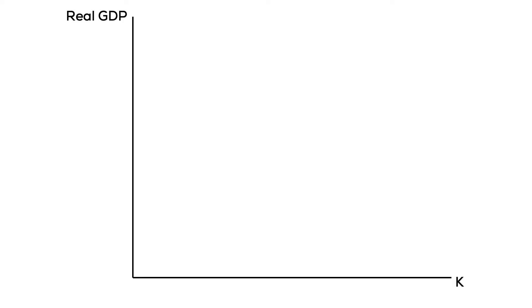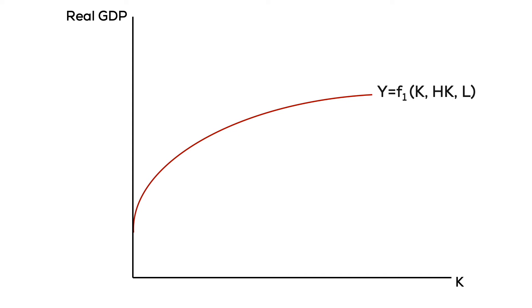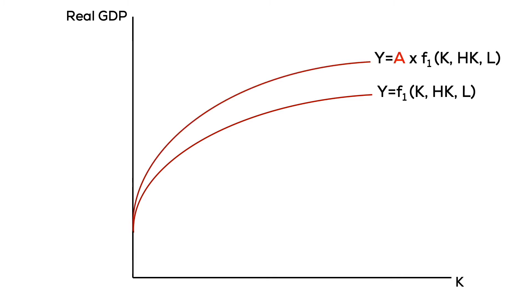We can use the production function to graph what we mean by this. With capital on the x-axis and real output on the y-axis, Solow Model 1 had a production function that increased at a decreasing rate. Once we implement technological improvements through A, it pushes our entire production function upwards — production increases for every level of capital. Instead of capital K producing Y1, it now produces a higher output of Y2. That's how technology increases economic growth.